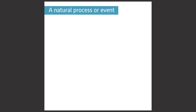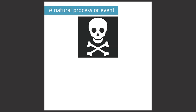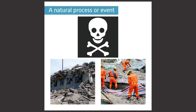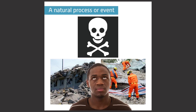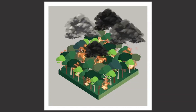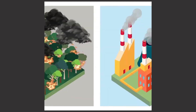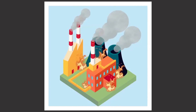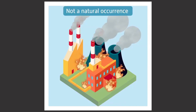A natural hazard is defined as a natural process or event that has the potential to cause loss of life, damage to people and or property, and seriously disrupts human activity. A fire caused by a lightning strike in a forest would be seen as a natural hazard as it meets these criteria. However, a fire started by a leak in a chemical factory would not be a natural hazard, because it is not a natural occurrence.